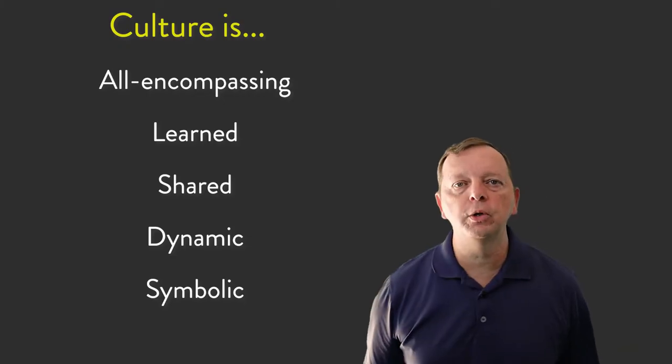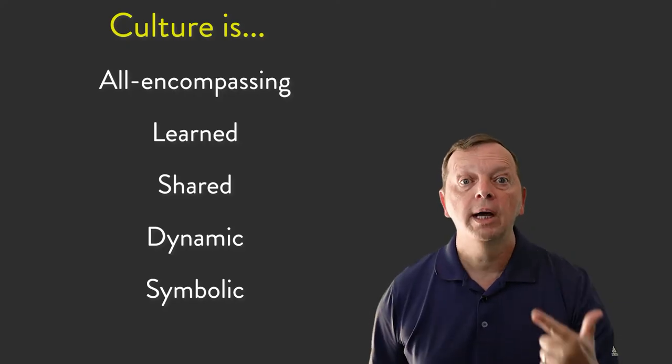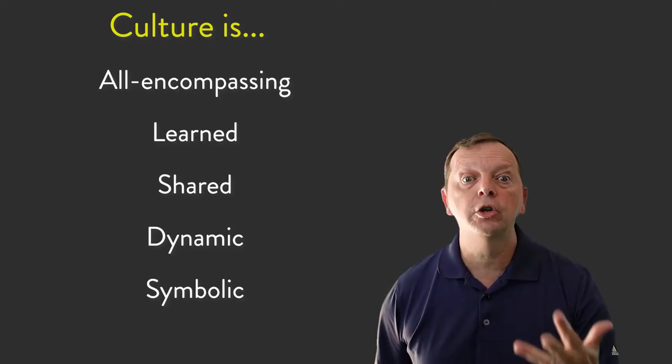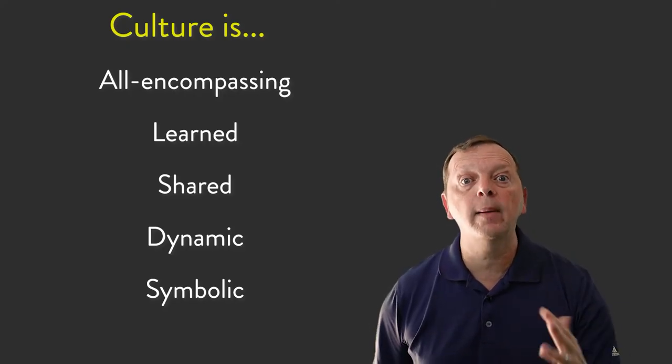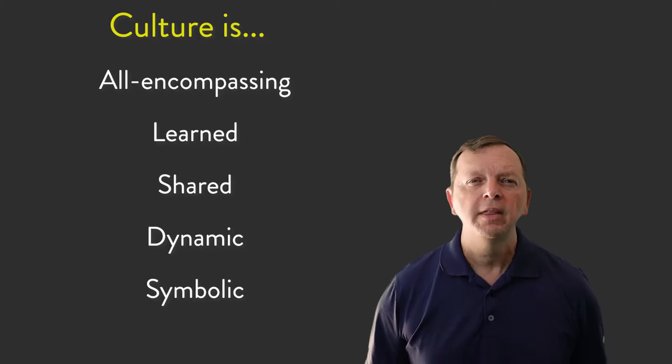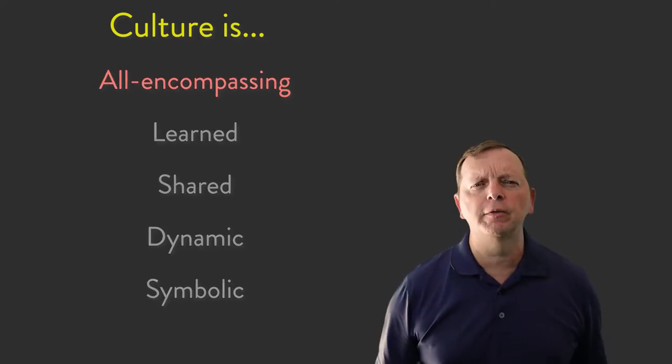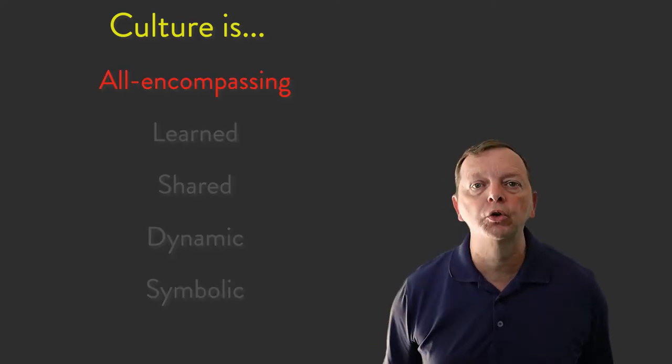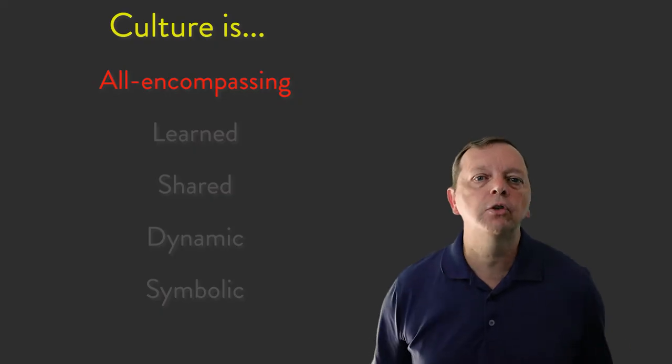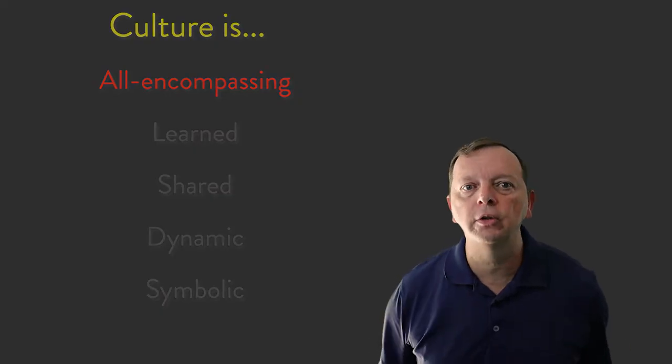Now, there are five things we should know about culture. First of all, it is all-encompassing, it is learned, it's shared, it's dynamic, and it is symbolic. From the definition of culture, we've already touched on that culture is all-encompassing — it is the total knowledge, attitudes, and beliefs of a group. You cannot get away from culture. Culture envelops each and every one of us and touches every aspect of our lives. Everything we are and everything we do is shaped by culture.